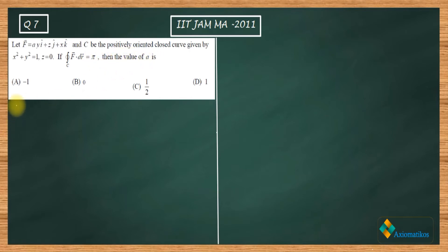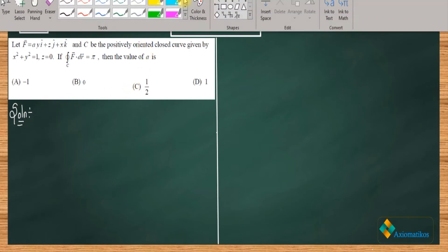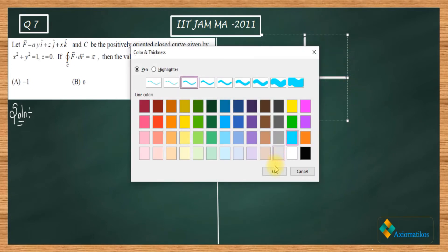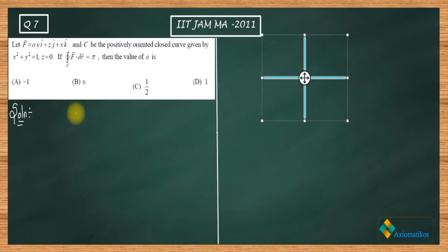So now let us proceed. Firstly, we need to understand the path on which we have to travel. Now let us draw a system. Try to see why I am drawing this two-dimensional system - because in your question it is given to you that z is 0.